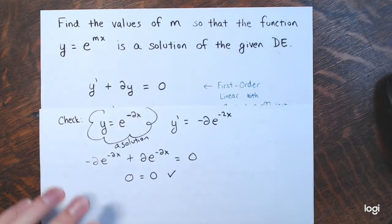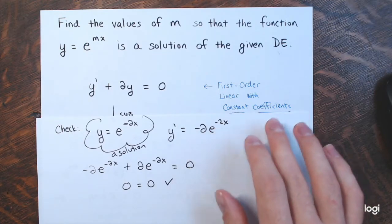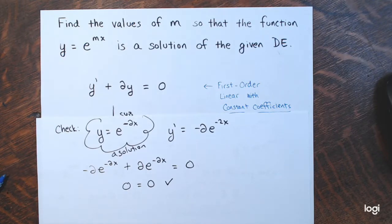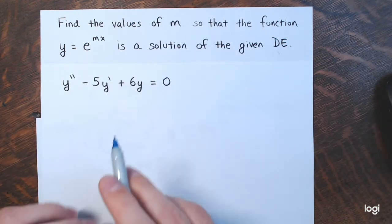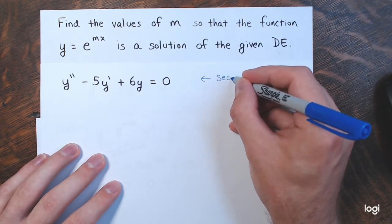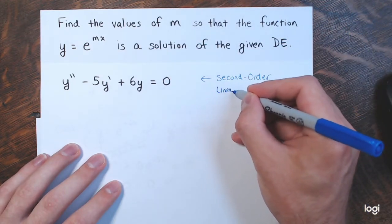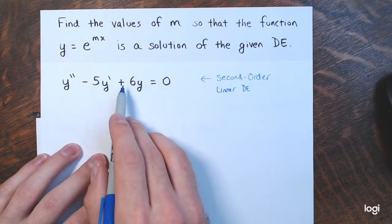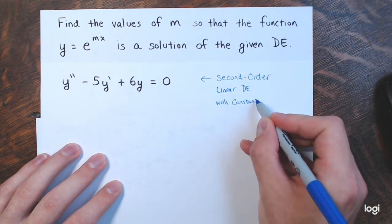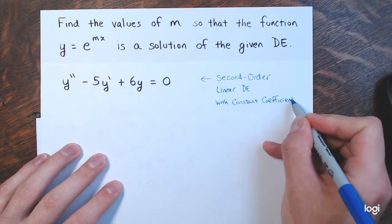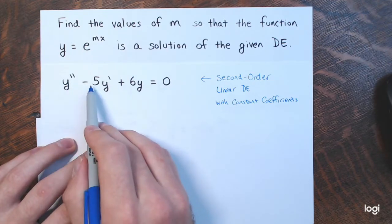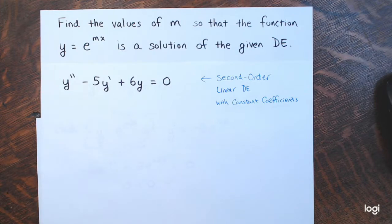Let's do one more example. This is a second order linear differential equation with constant coefficients. The coefficients are 1, negative 5, and positive 6, with 0 on the other side.